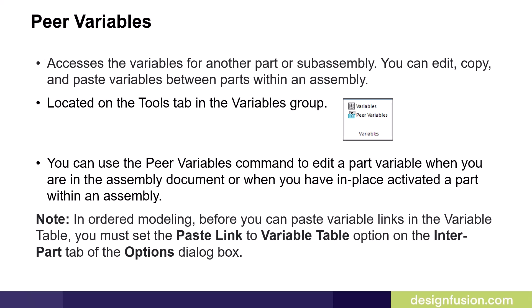You can use the Peer Variables command to edit a part variable when you are in the assembly document or when you have in-place activated a part within the assembly. In ordered modeling, before you can paste variable links in the Variable table, you must set the Paste Link to Variable table option on the Enter Part tab of the Options dialog box.